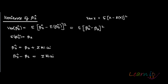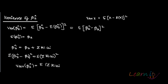So now what you need to do is find out the variance of beta 2 hat. If you square this expression and take the expectation, you are actually finding the variance of beta 2 hat, which is E of summation ki ui, whole square.